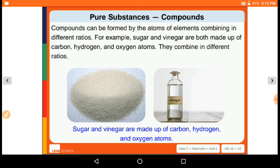Compounds can be formed from atoms or elements combining in different ratios. For example, sugar and vinegar are both made up of carbon, hydrogen, and oxygen atoms, but they combine in different ratios. So sugar and vinegar are made up of carbon, hydrogen, and oxygen atoms, but the ratio of these three elements is different. That's why vinegar is in liquid form and sugar is in solid crystal form.